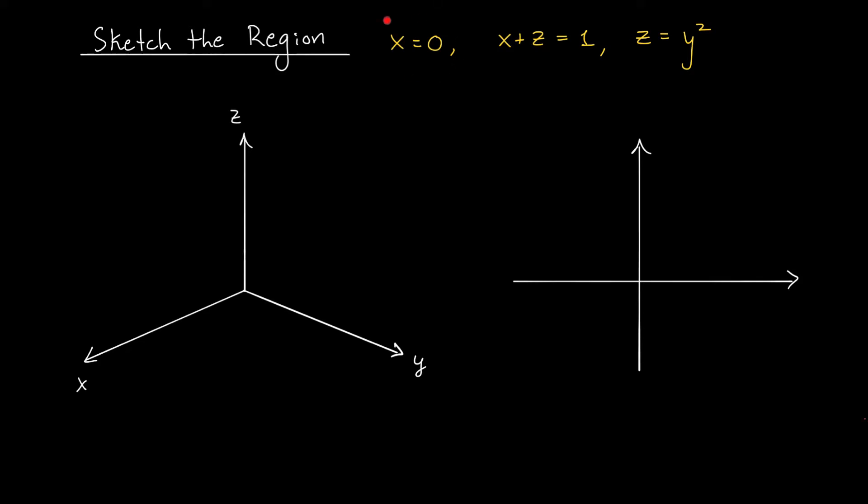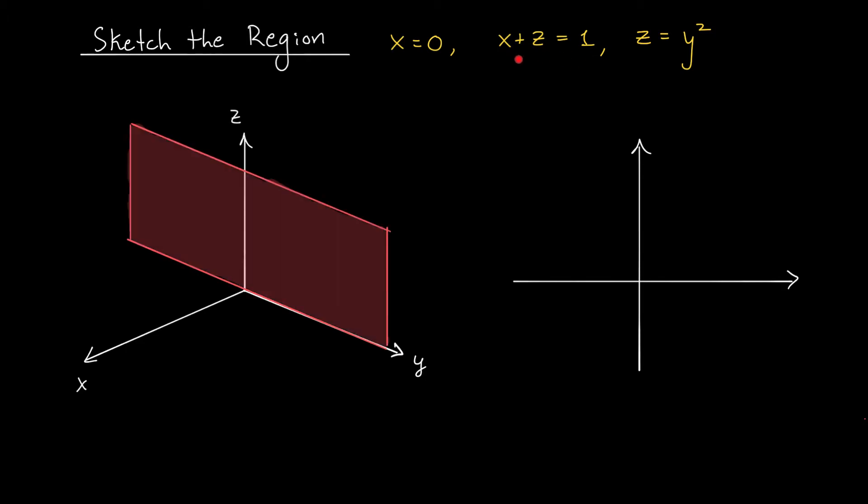Here our region is bounded in part by the plane x equals 0, which is this plane right here, the y, z plane. We are also bounded by this plane, x plus z equals 1. We can sketch that plane by using the same tricks that we've used in earlier videos. We can figure out where it crosses the 3 coordinate axes and join up those points with straight lines to visualize our plane.